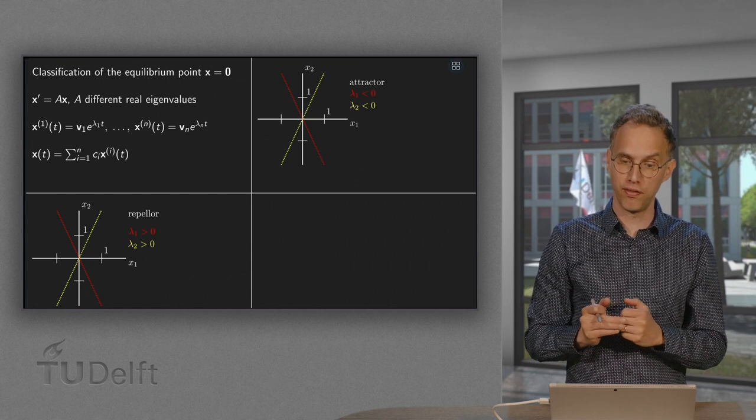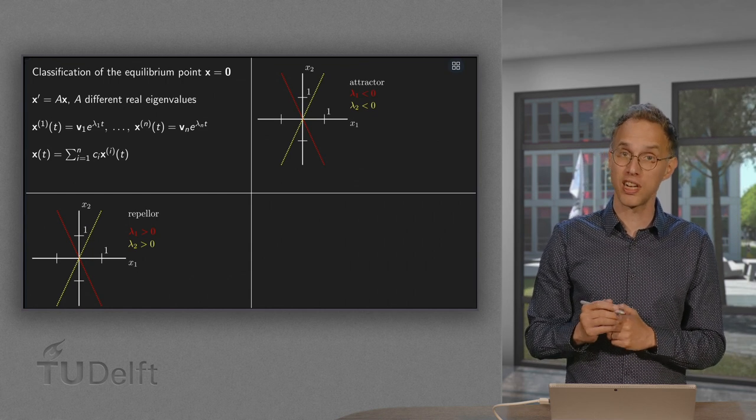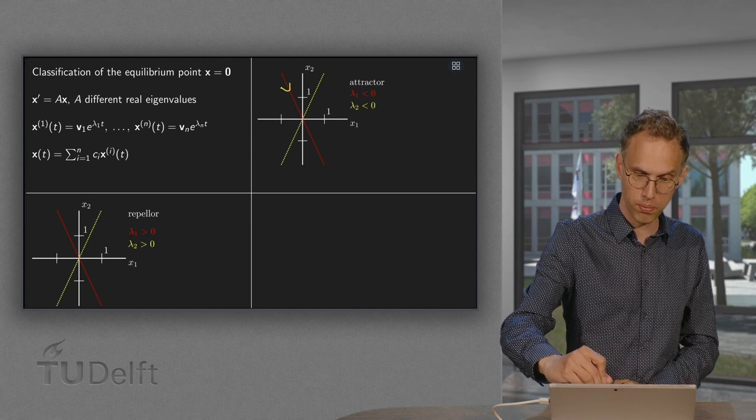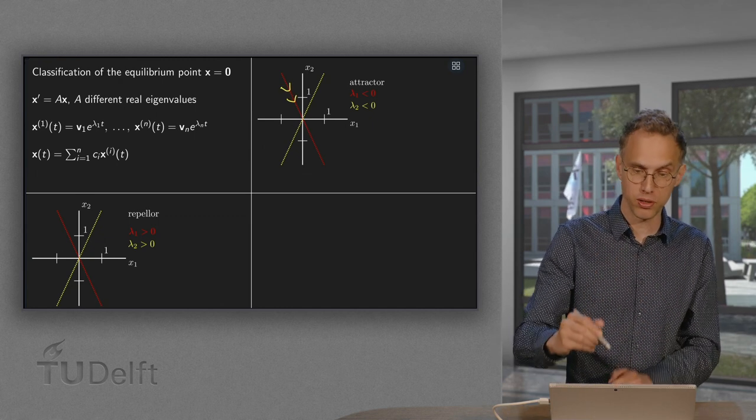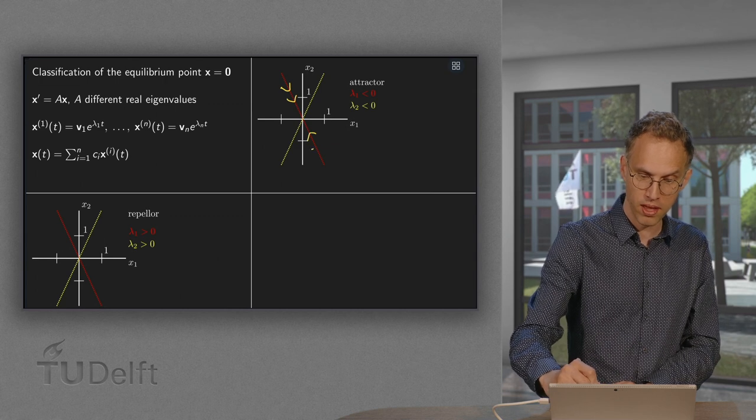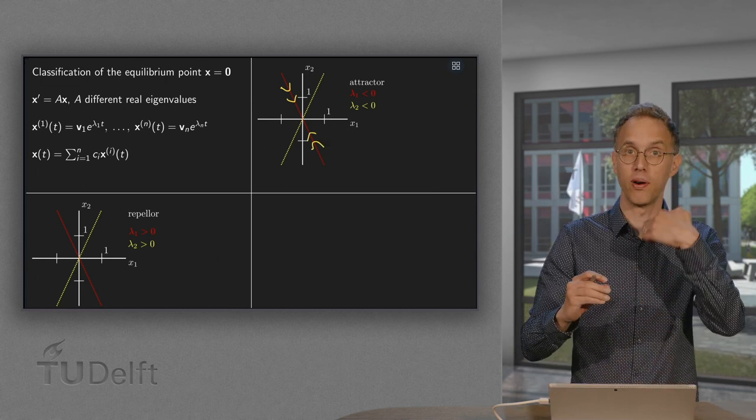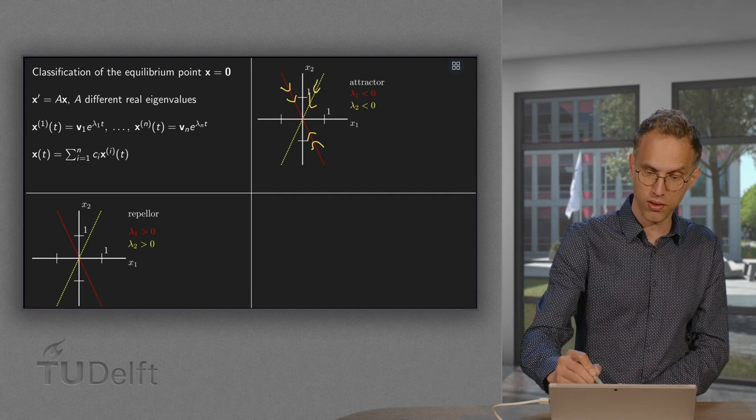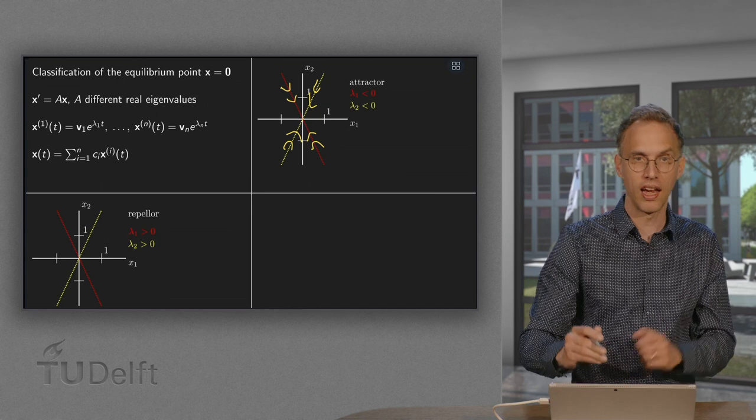Other possibility, reverse, if both eigenvalues are negative. In that case, you are pulled in if you are at v1 due to the negative lambda 1. And you are also pulled in due to the e^(lambda 2t) if you stay on v2. In this case,